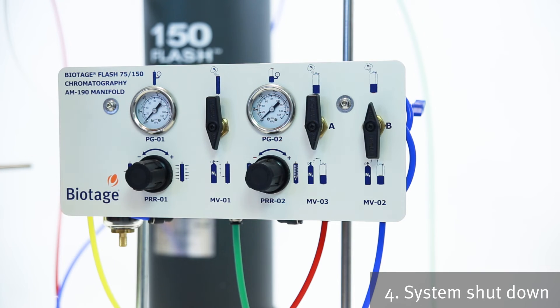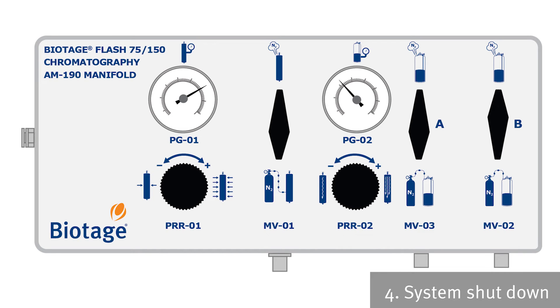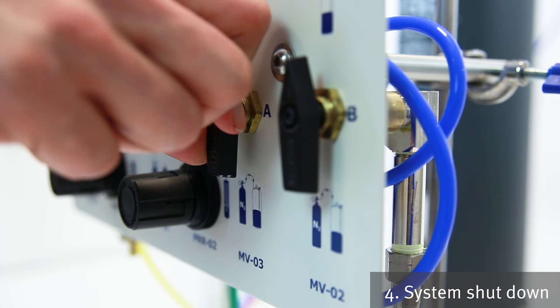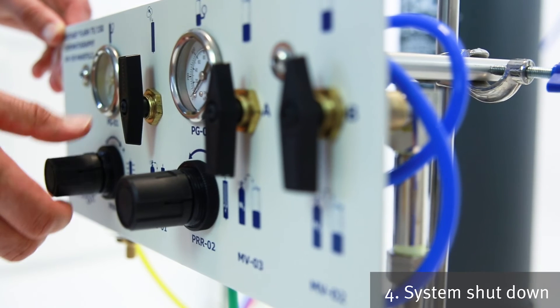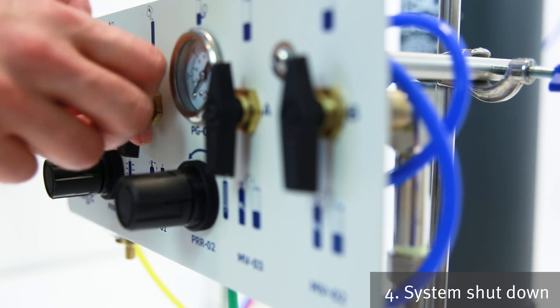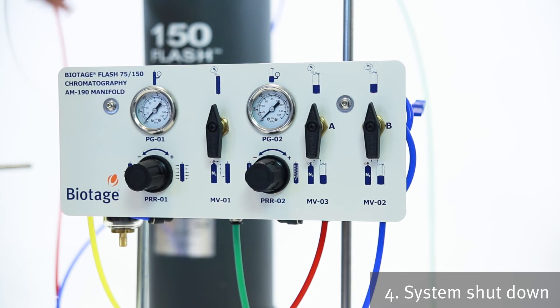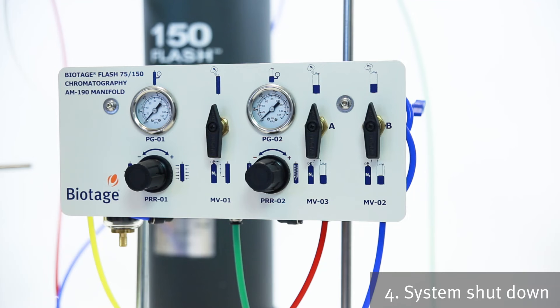Okay, so once you've finished your run, in order to depressurize the system, it's just simply a reverse of what we did in the first place. So we're going to turn down the pressure gauge here on PRR2 and wait for the pressure to drop down. Once that's dropped down, we can turn the 60 liter solvent reservoir to the vent position. Then we're going to depressurize the radial compression module. So we're going to turn this down, wait for that to drop below 20 psi. And then we're going to turn that to the vent position. And just watch for the red dot, the pressure indicator on the radial compression module, to pop back in. And then we know it's safe to take the system apart.